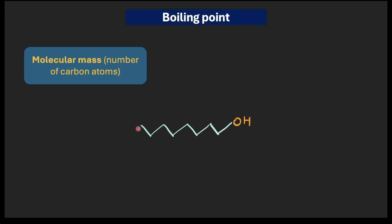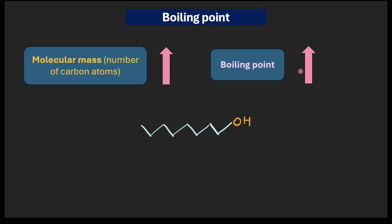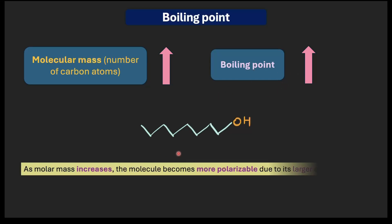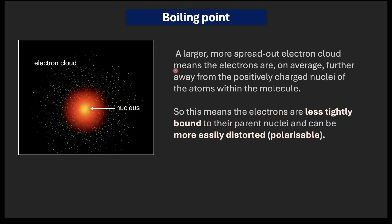First is molecular mass, or the number of carbon atoms in an alcohol. As the number of carbon atoms increases, the boiling point also increases. This is because as molecular mass increases, the molecule becomes more polarizable due to its larger electron cloud. Think of electrons as a diffuse cloud of negative charge around the atomic nucleus — a larger, more spread-out electron cloud means the electrons are, on average, further from the nucleus and more loosely bound.